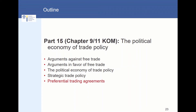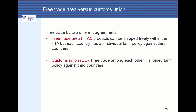I would like to talk about the difference between a free trade area and a customs union — preferential trading agreements. A free trade area (FTA) is characterized by products being shipped freely within the free trade area, but each country has an individual tariff policy against third countries. In a customs union, we also have free trade among member countries, but we also have a joint tariff policy against third countries.